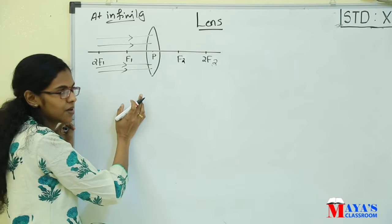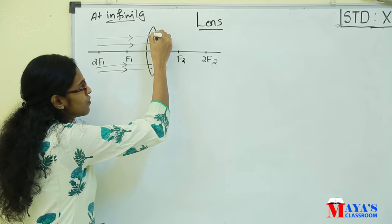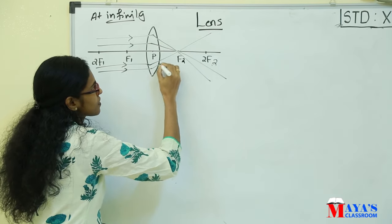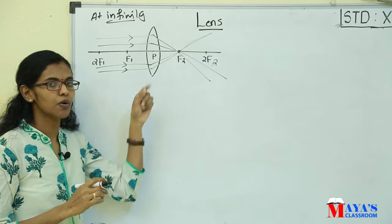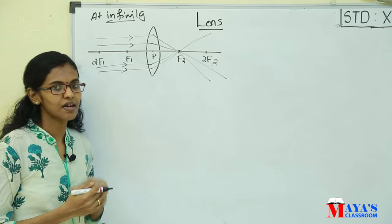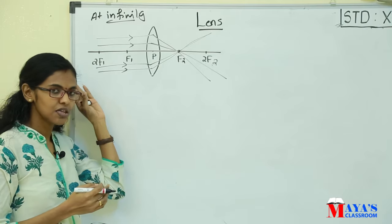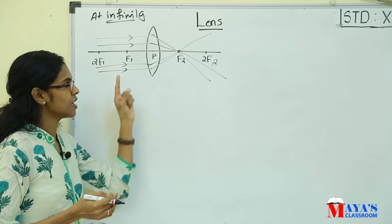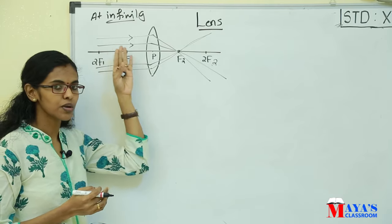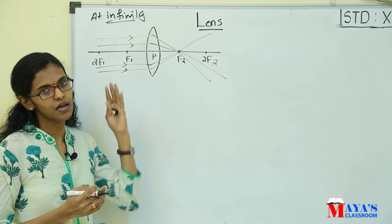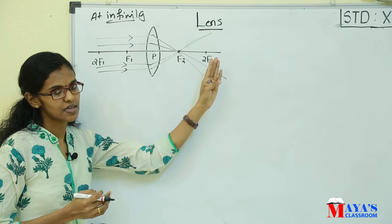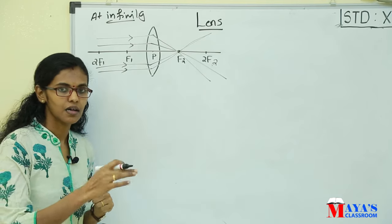After refraction, the parallel ray passing through the focus will pass and converge. The image is formed at a point. This is the image. One object is at infinity — it will be parallel rays. After refraction, the rays will meet at a point. The point is the focus, that is F2, the right-side focus. That is the image.